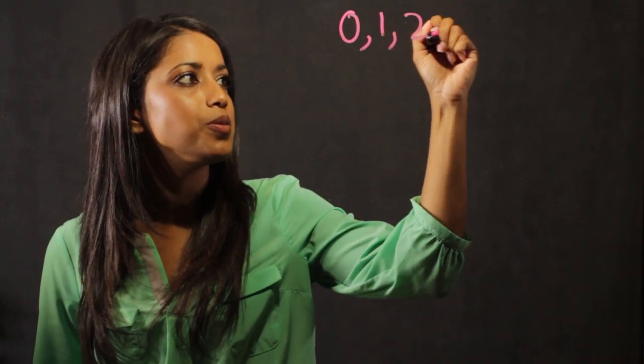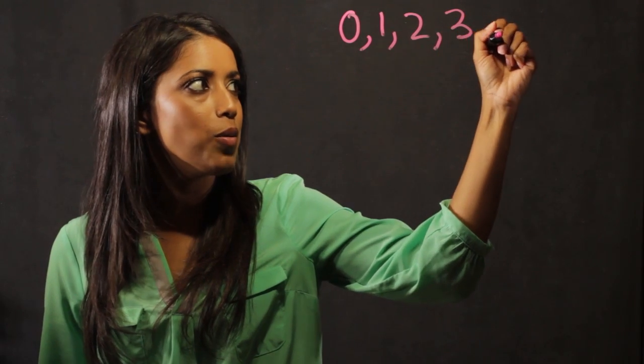First of all, we want to define what a whole number is. A whole number are our counting numbers beginning with zero. For example, zero, one, two, three, and so on.